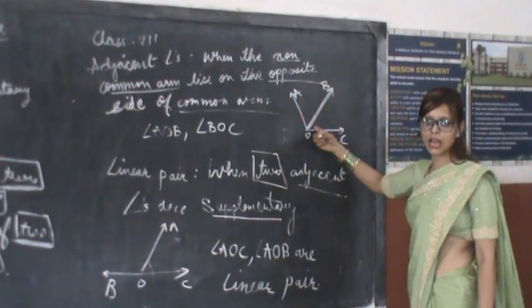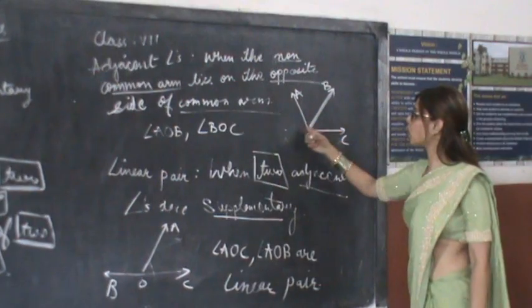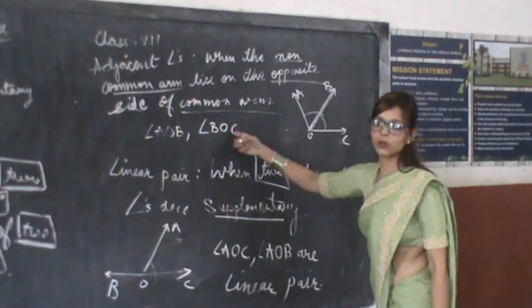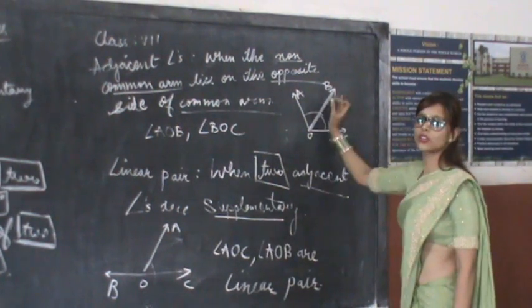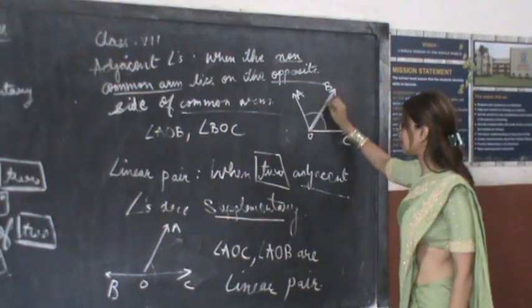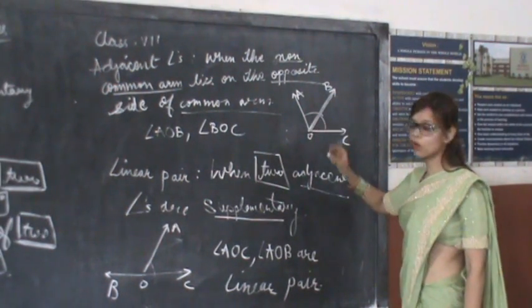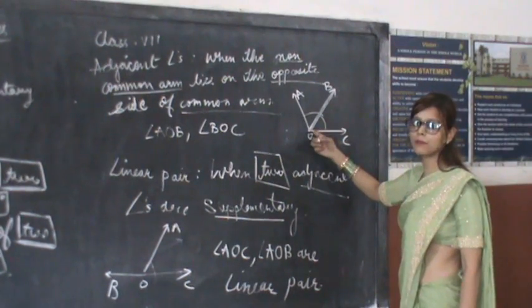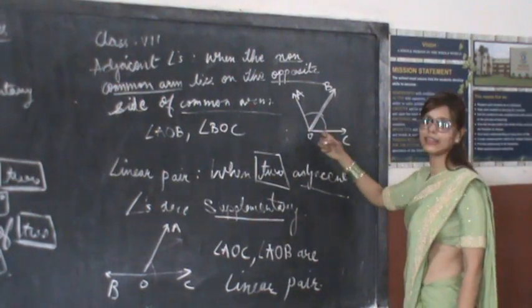BO is the common arm and you can clearly see the non-common arms of angle AOB and BOC lie on the opposite side of common arm. The non-common arm BO lies on the opposite side of common arm BO, that is AO and OC.